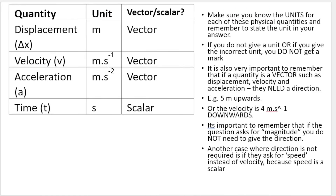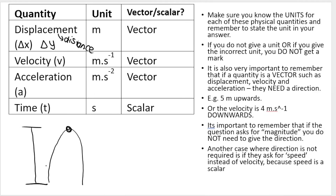You need to understand what each variable means and when to use it. We've got displacement — in the context of vertical projectile motion, it's delta Y. Delta Y is displacement, or the distance that you move. For example, if I throw an object upwards and it reaches a maximum height, I can ask you the height of the throw or the distance it traveled to reach maximum height — that would be delta Y. It's measured in meters, and it's a vector, so it needs a direction. If they ask for distance, you don't need to give a direction.